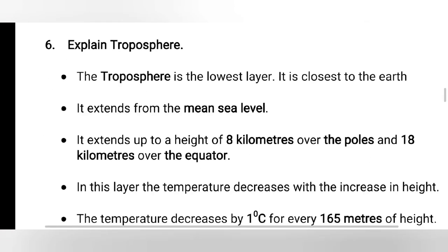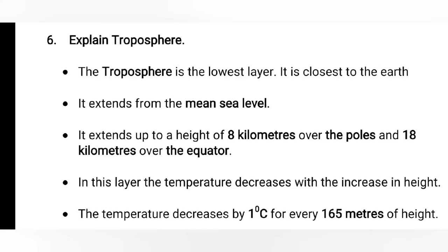Explain troposphere. The troposphere is the lowest layer, closest to the Earth. It extends from the mean sea level — mean sea level is used because sea levels are not uniform everywhere. It extends up to a height of 8 km over the poles and 18 km over the equator.